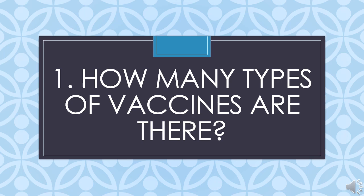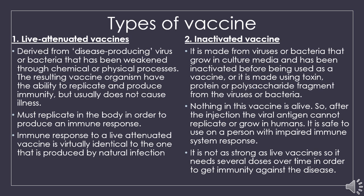Let's start with the first component about the types of vaccine. How many types of vaccines are there? Currently available vaccines can be classified into four main types: live attenuated vaccine, inactivated vaccine, toxoid vaccine, and subunit vaccine. Let's start with the live attenuated vaccine first. This type of vaccine is derived from disease-producing viruses.